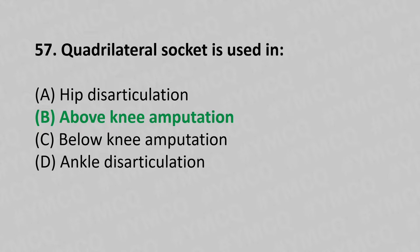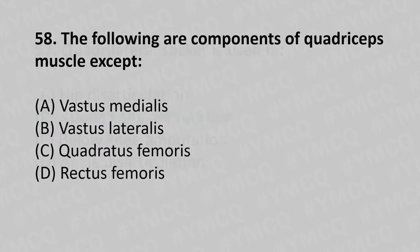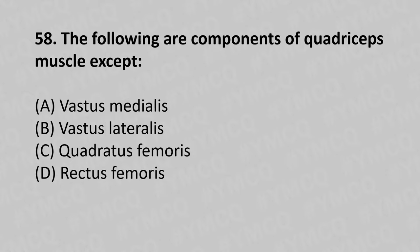Moving to our 58th question. The following are the components of quadriceps muscles, except: Option A, Vastus medialis; Option B, Vastus lateralis; Option C, Quadratus femoris; Option D, Rectus femoris. And the answer is Option C, Quadratus femoris.